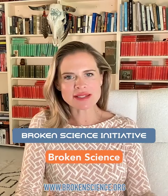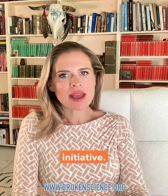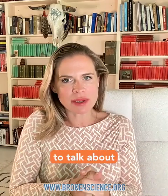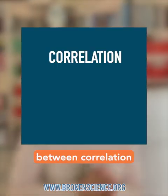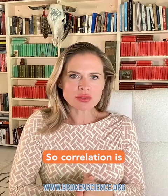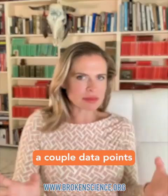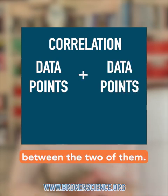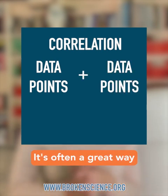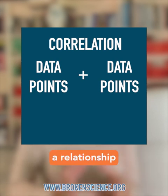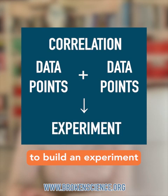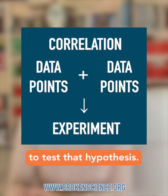Hi, it's Emily from the Broken Science Initiative. I just came across a news story that's spreading like wildfire that I thought would be a great example for us to talk about the difference between correlation and causation. Correlation is when you have a couple of data points and you're trying to find some potential relationship between the two of them. It's often a great way of trying to figure out if there is a relationship between things, and then you can go on and decide to build an experiment to test that hypothesis.